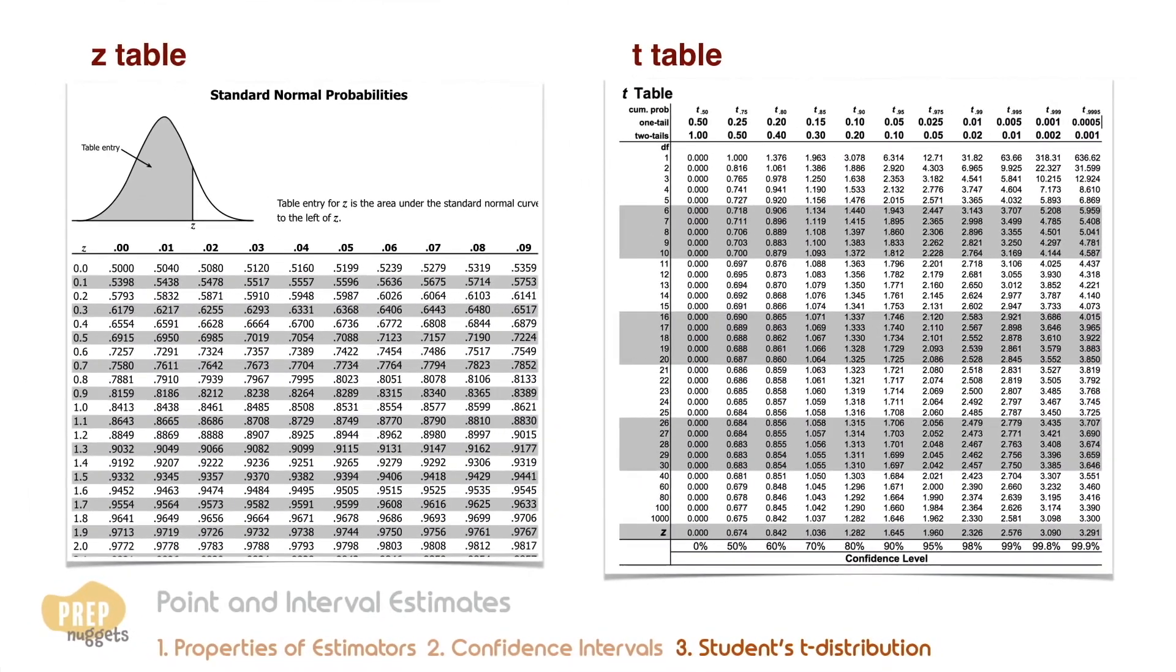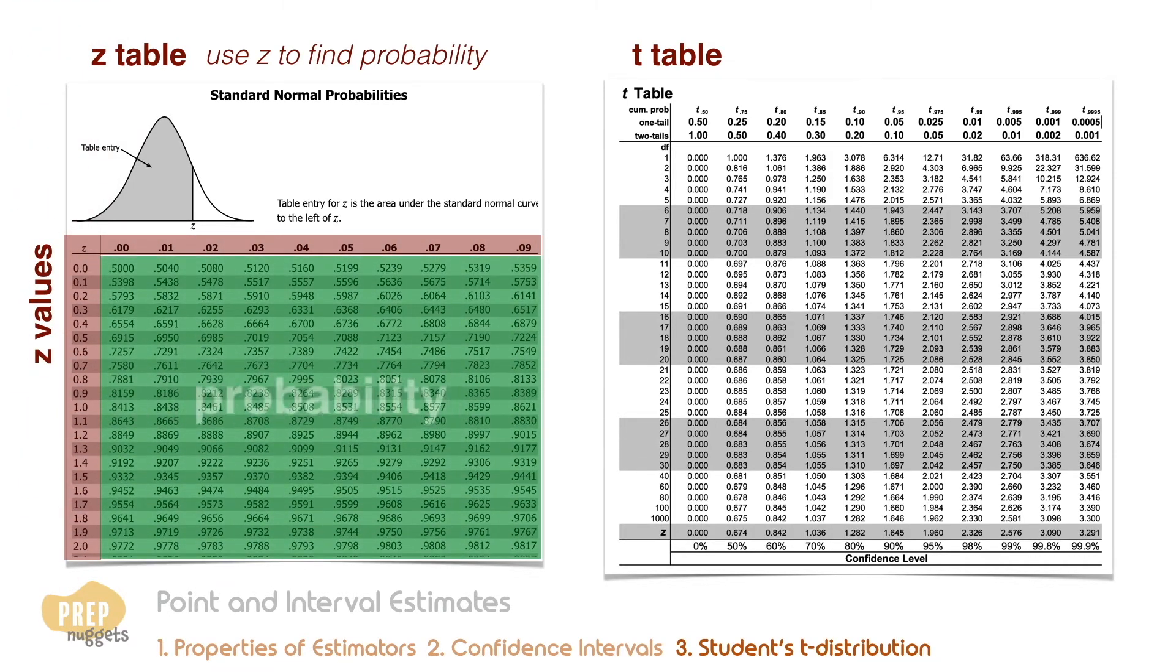It's important to note that the T table is vastly different from the Z table. The focus for the Z table is that we already know the Z value, and we want to find the corresponding probability in the normal distribution. If we want to know the Z value given a probability, we have to reverse the process like we did in the last example.